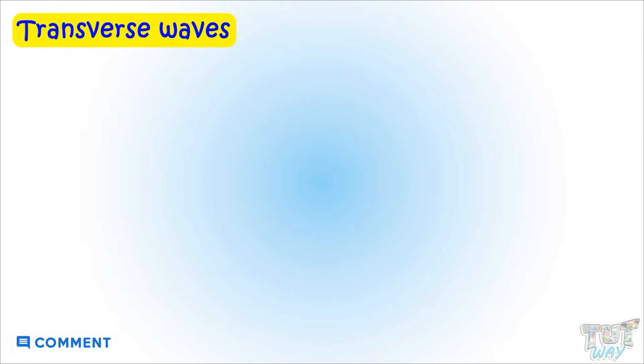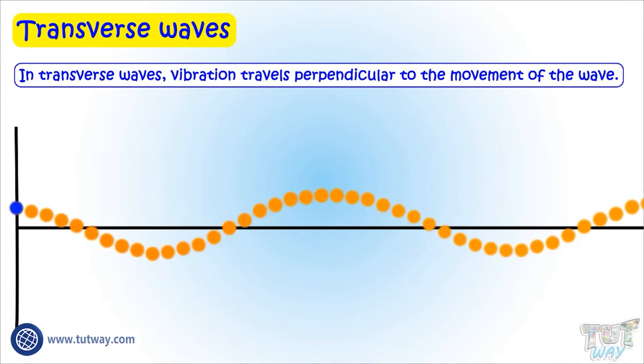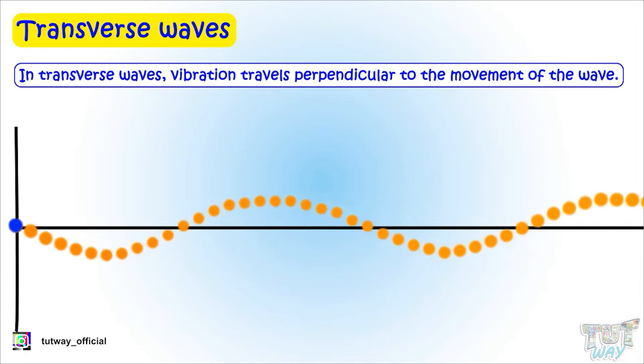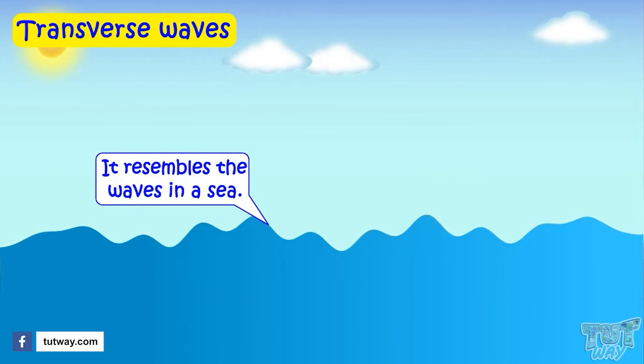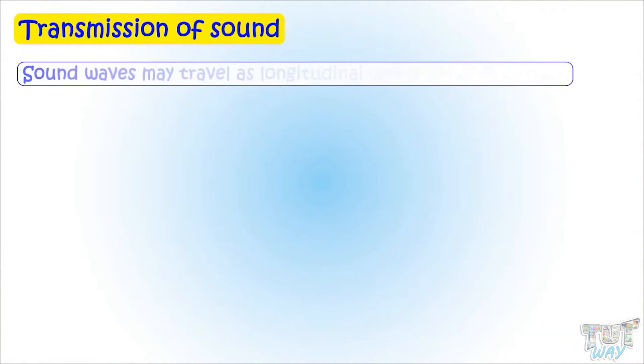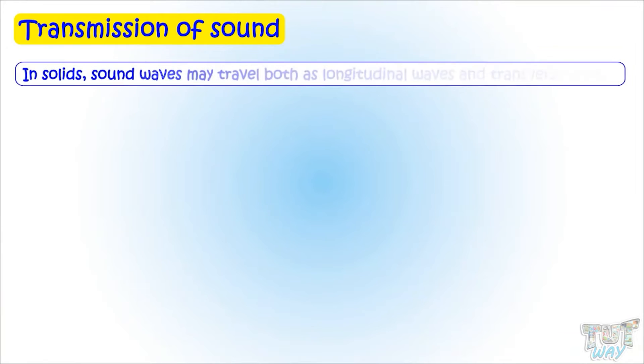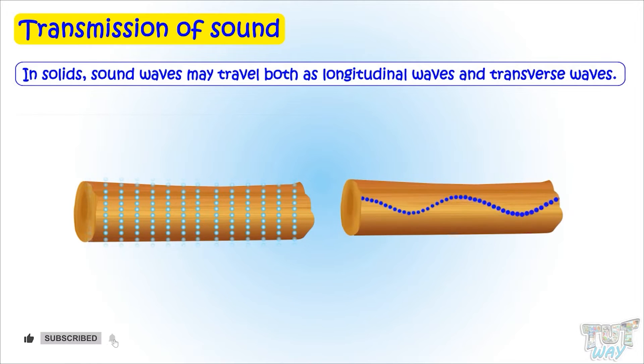Next is the transverse wave. Here, the vibration travels perpendicular to the movement of the wave, or the particles move up and down, and it resembles the waves in the sea. Sound waves travel as longitudinal waves in air and water. And in solids, sound can travel both as longitudinal as well as transverse waves.